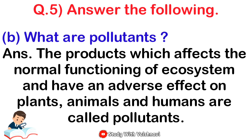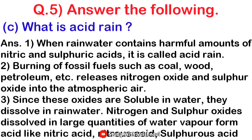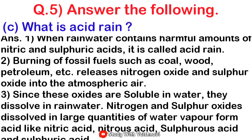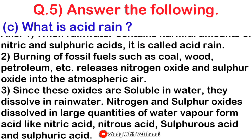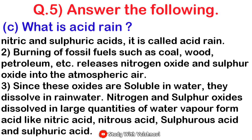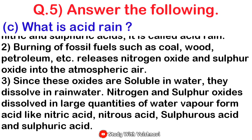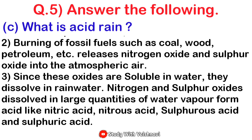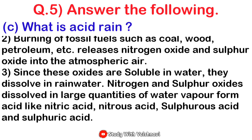Next: what is acid rain? Write the answer in points. First: when rainwater contains harmful amounts of nitric and sulfurous acid, it is called acid rain. Second: burning of fossil fuels such as coal, oil, petroleum, etc. releases nitrogen oxide and sulfur dioxide into the atmospheric air. Third: since nitrogen oxides are soluble in water, they dissolve in rainwater and form acids like nitric acid and sulfuric acid.